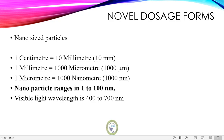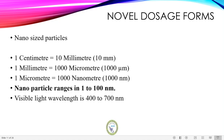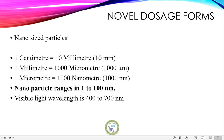1 cm is equal to 10 mm. Now 1 mm is equal to 1000 micrometers, and 1 micrometer is equal to 1000 nanometers. We must remember: 1 micrometer equals 1000 nanometers, 1 mm equals 1000 micrometers. Nanoparticles are generally in the range of 1 to 200 nanometers — that is the size count.